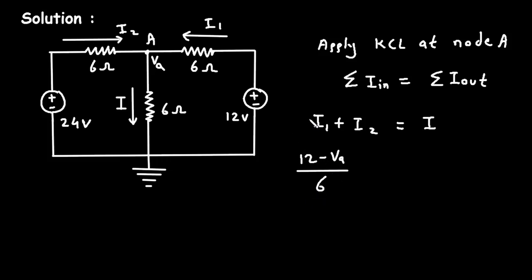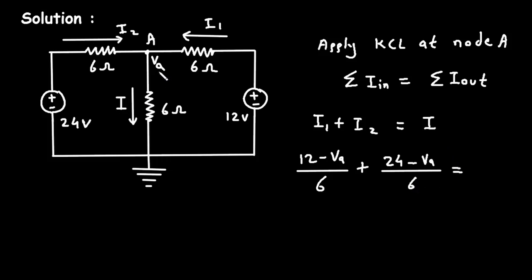I1 equals (12 minus VA) divided by 6 — higher voltage minus lower voltage divided by resistance, which is simply Ohm's law I = V/R. Then I2 equals (24 minus VA) divided by 6. And current I equals (VA minus 0) divided by 6.